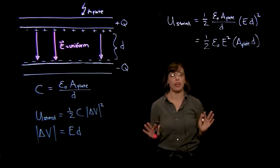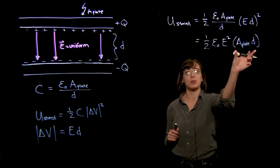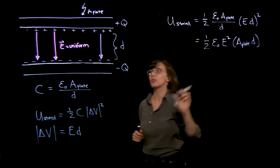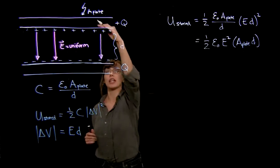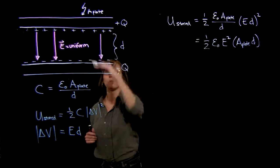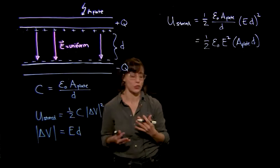Now I can stop and think, what is this telling me? Well, this area of the plate times the distance between the two plates, what that really is is the volume between these two plates. It's the area times the distance, that's the volume between the two plates. Or in this example, it's the volume where the electric field is non-zero.